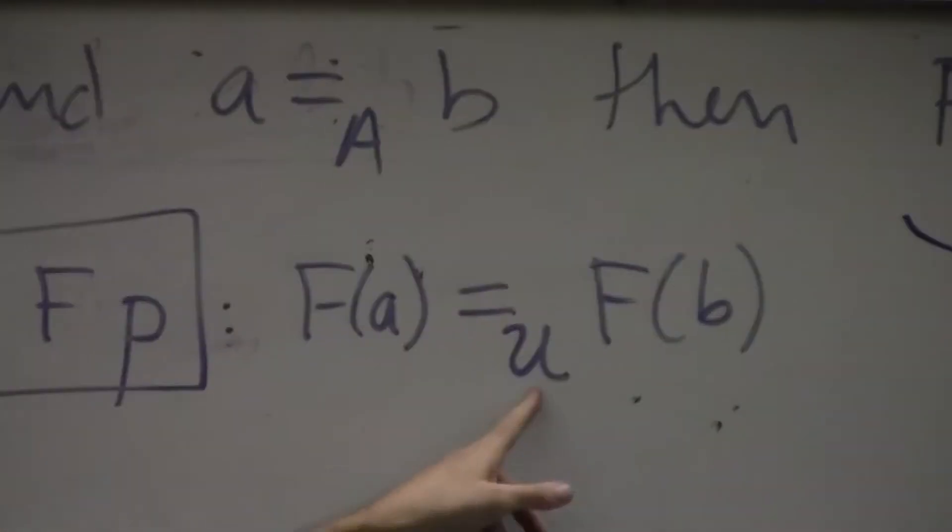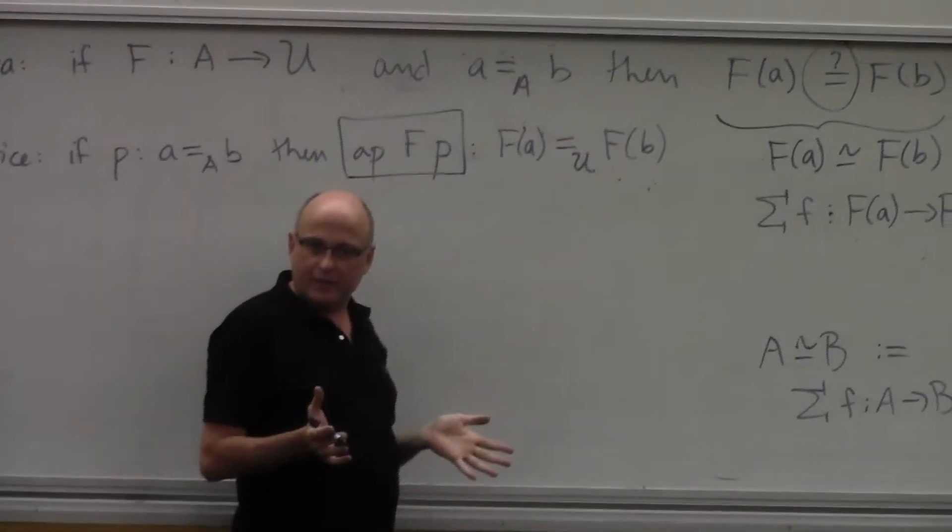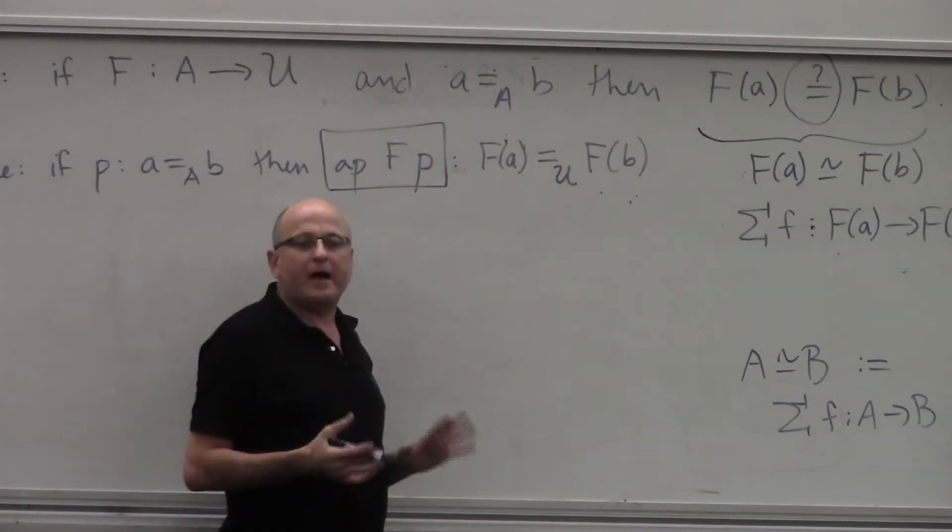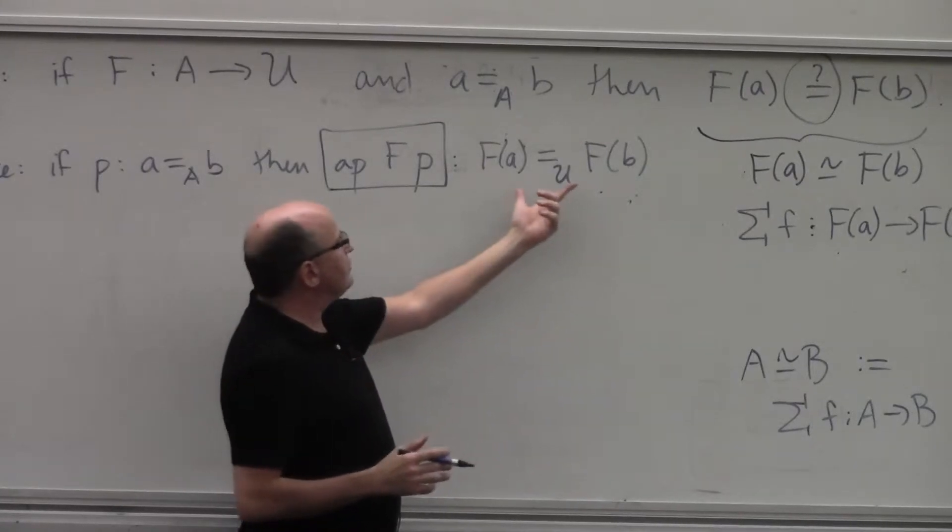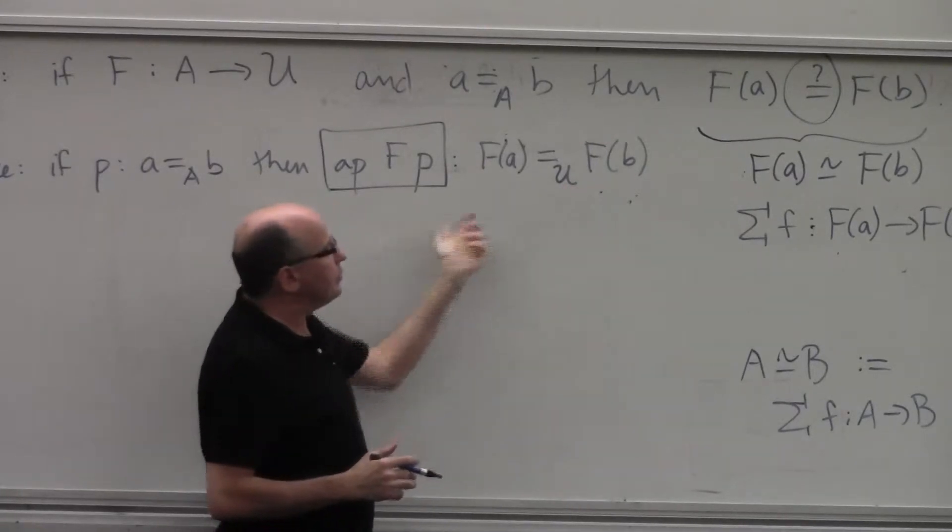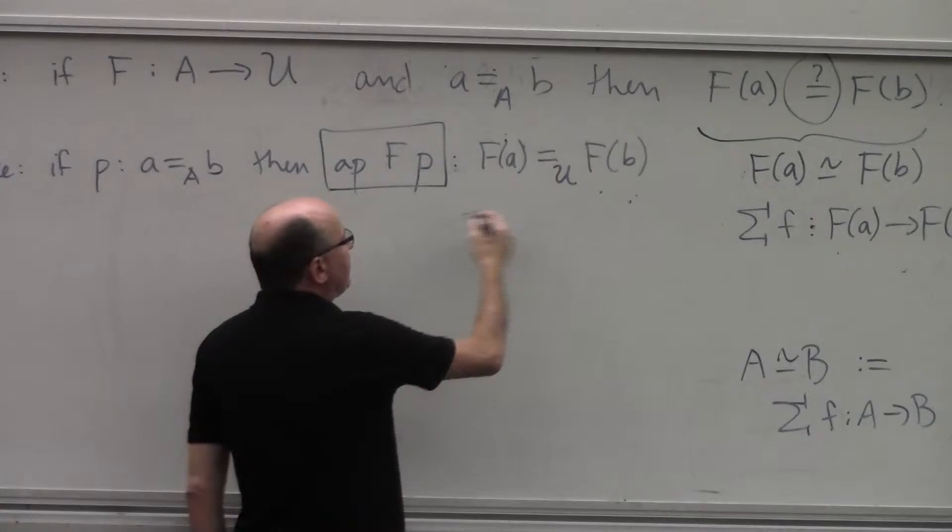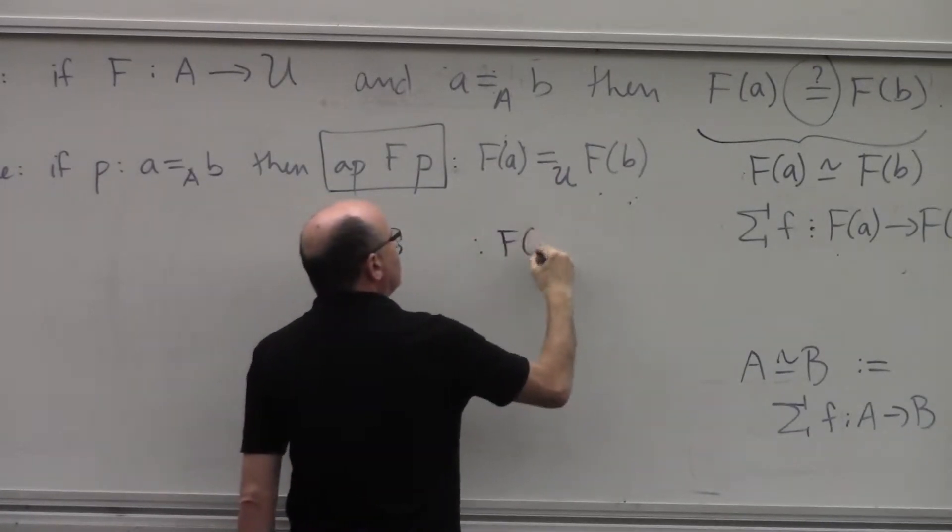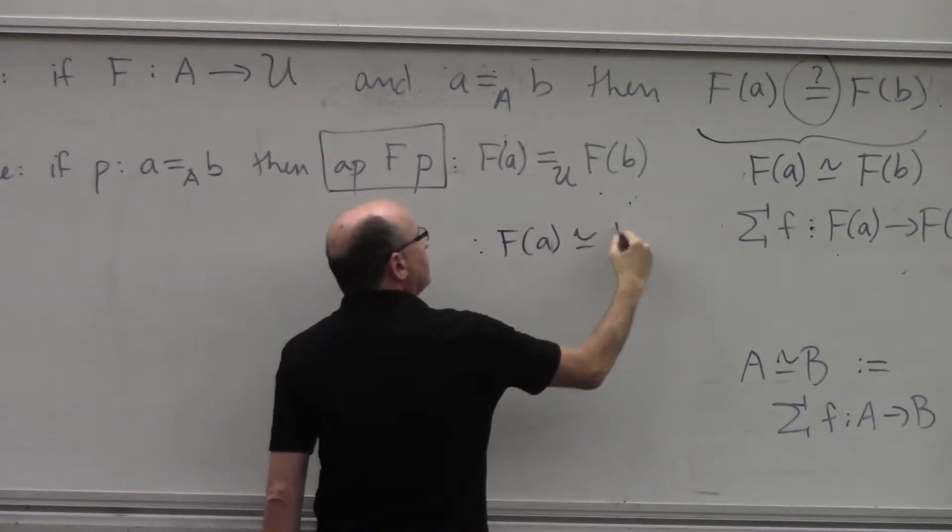Because there's a path between f of a and f of b, so far in my development doesn't give me the ability to do anything. It's just a path. However, I will be able to turn these paths into equivalences. So there will in fact be a mapping that turns this into an equivalence between f of a and f of b.